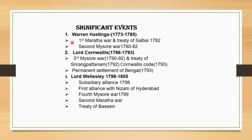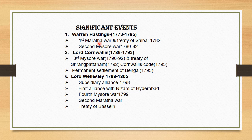The significant events of Governor Generals and Viceroys — first is Warren Hastings. There are many important things under Warren Hastings: the Regulating Act 1773, under which Warren Hastings was made the first Governor General of Bengal, and the Amending Act of 1781, in which many things changed. Also the First Maratha War and the Treaty of Salbai in 1782, when the First Maratha War was concluded.